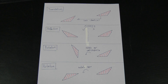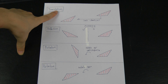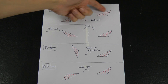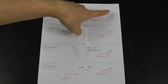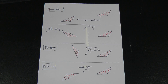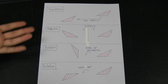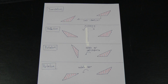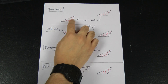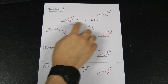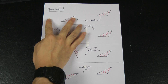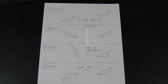Something very important: whenever it's translation, the triangle will stay identical — it will stay exactly the same. It won't enlarge, rotate, or reflect. It basically looks exactly the same, and the triangle is just going to move either this way or any other direction. This is the pattern of translation.